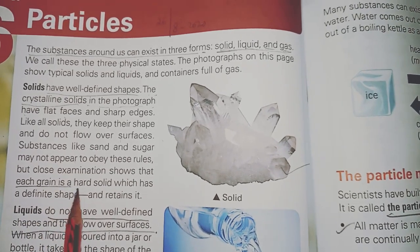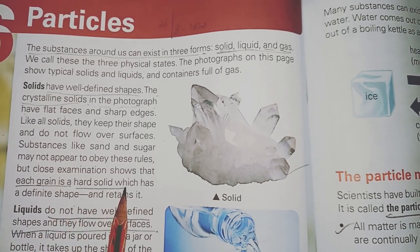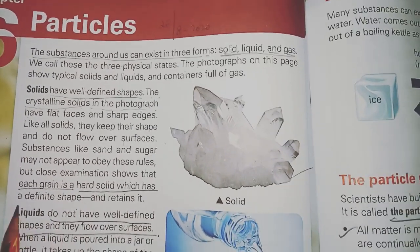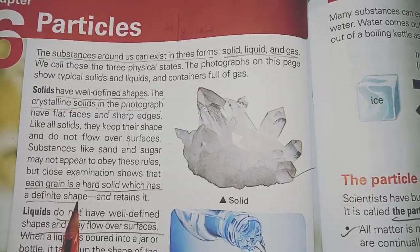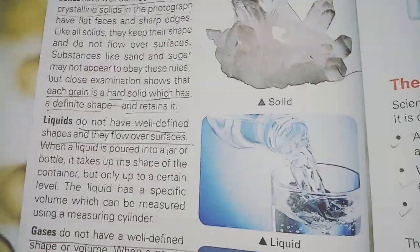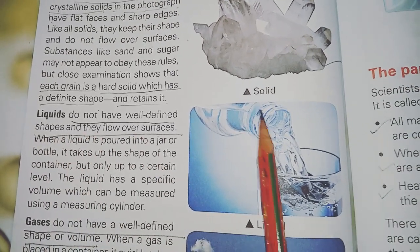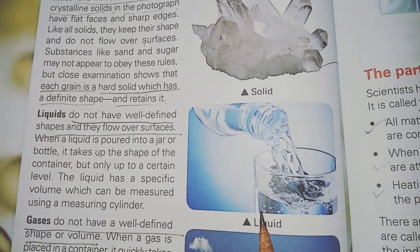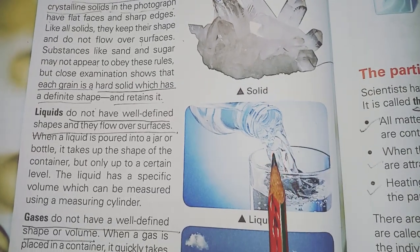Each grain is a hard solid which has a definite shape and retains it. So that is the definition of a solid. Now, coming to liquids — liquids do not have a well-defined shape. They flow over the surface, so there is no fixed shape of a liquid.